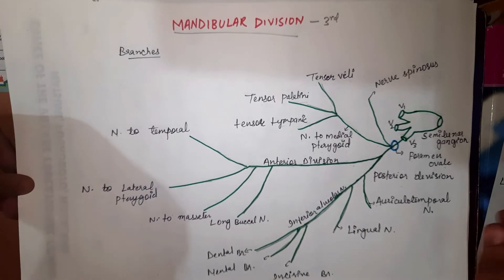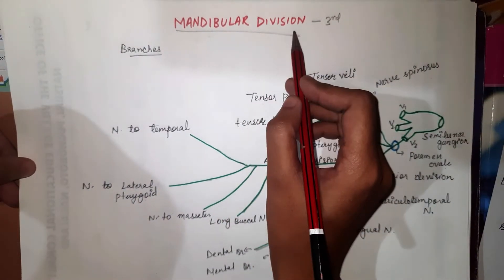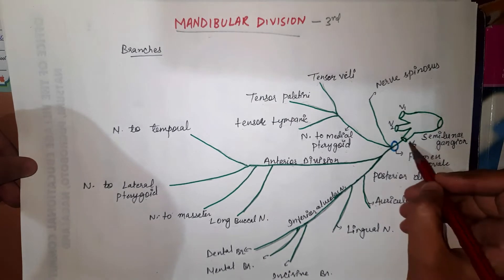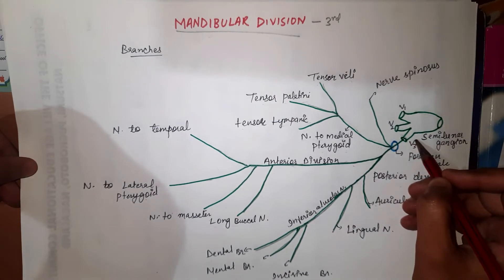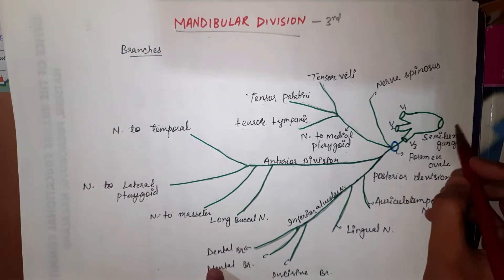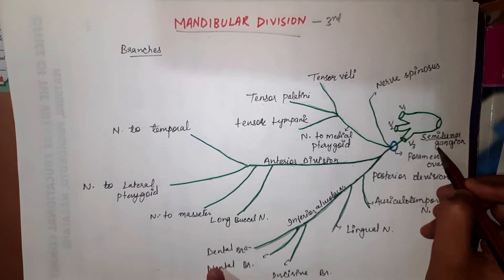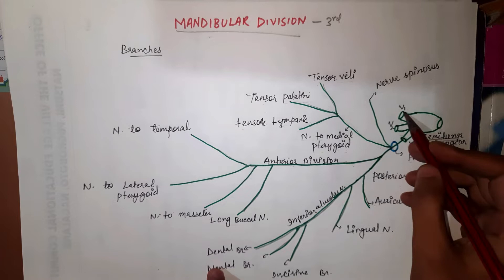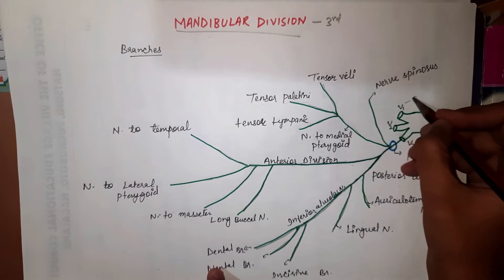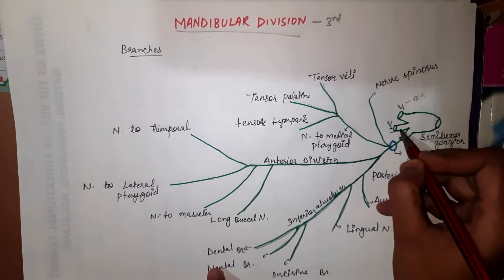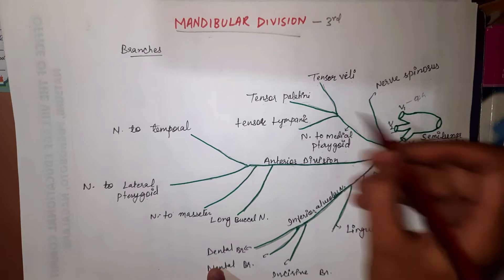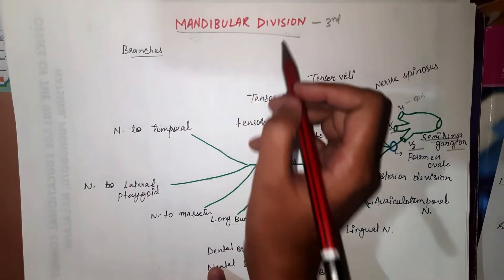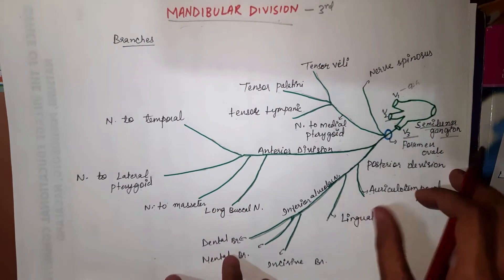Hello everyone, today we are going to study about mandibular division. This is the third division of the trigeminal nerve. Basically, the trigeminal nerve starts from the semilunar ganglia. It has three divisions: the first division is called ophthalmic division, the second division is called maxillary division, and the third one is called mandibular division or the mandibular nerve.